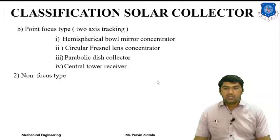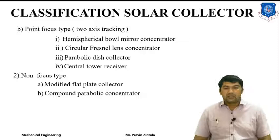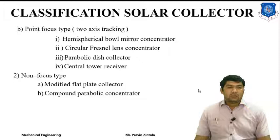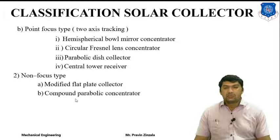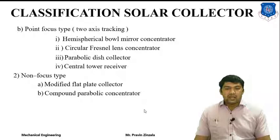Next is the non-focusing type collector. This type of collector is generally used as an improvement over the flat plate collector method. The first example is the modified flat plate collector, which uses a plane reflector to concentrate maximum solar radiation on the flat absorber surface. The second is the compound parabolic concentrator, which is also an improvement over the simple type of collector, where the reflector is placed in a parabolic shape — hence it is called a compound parabolic concentrator.